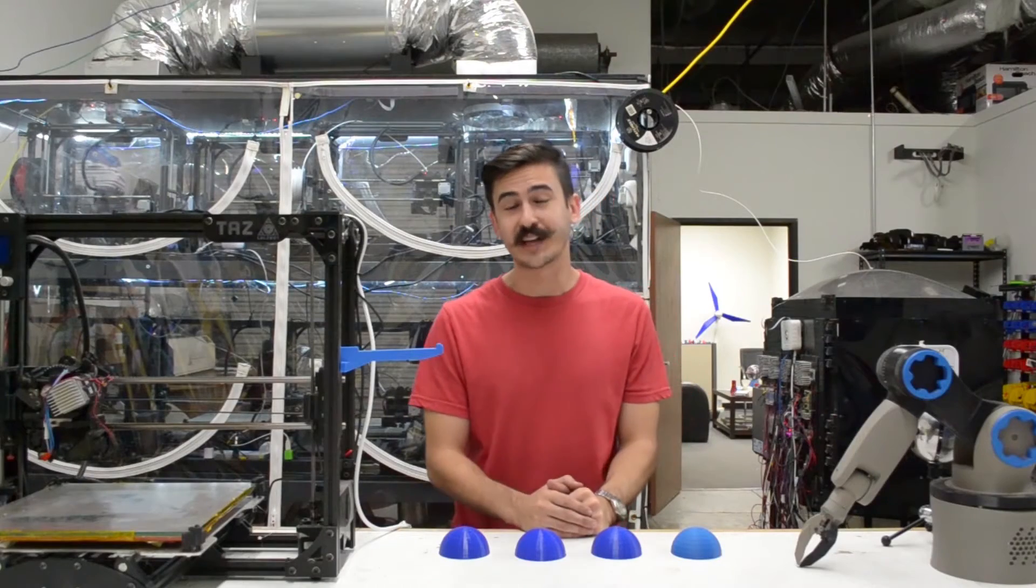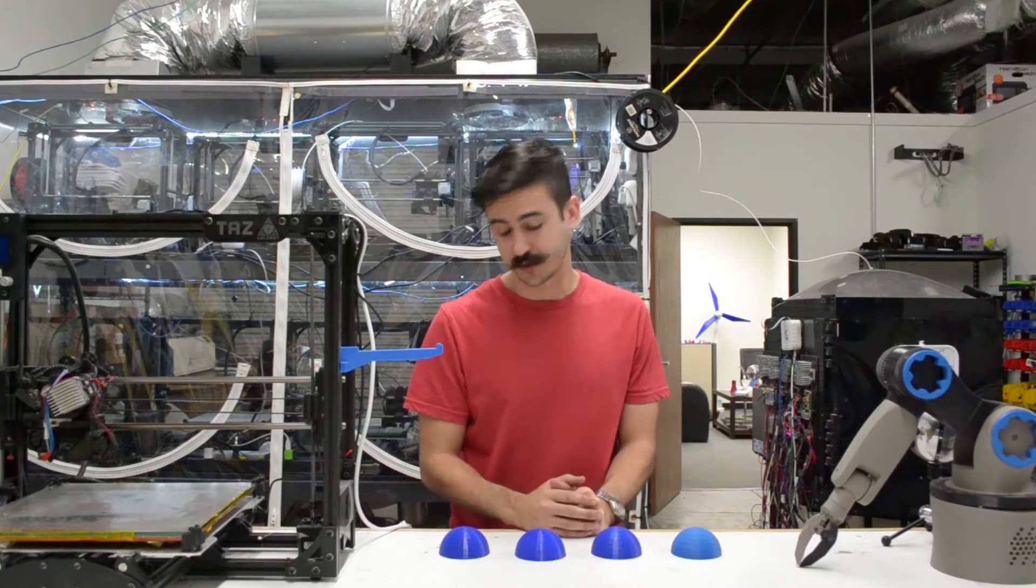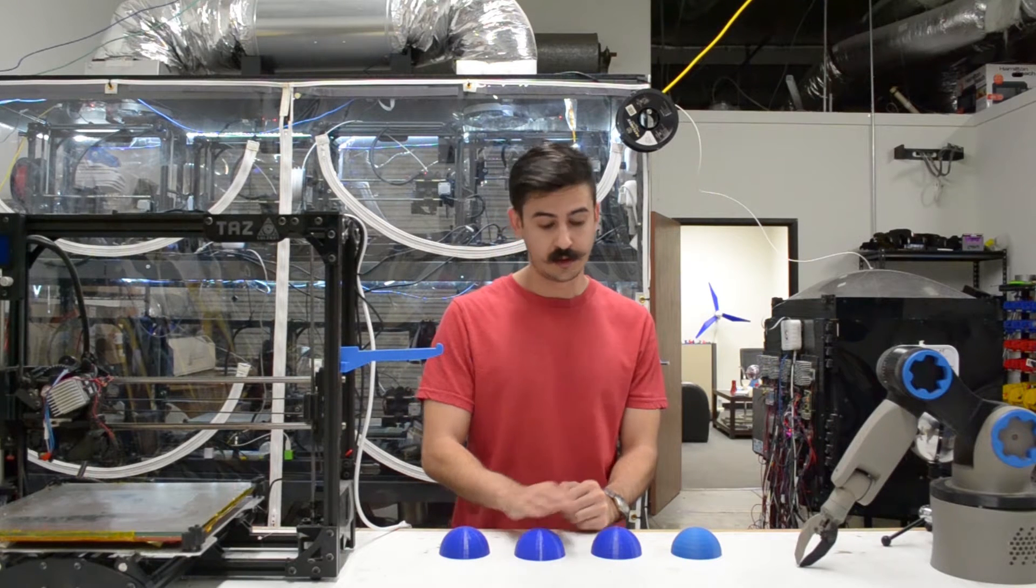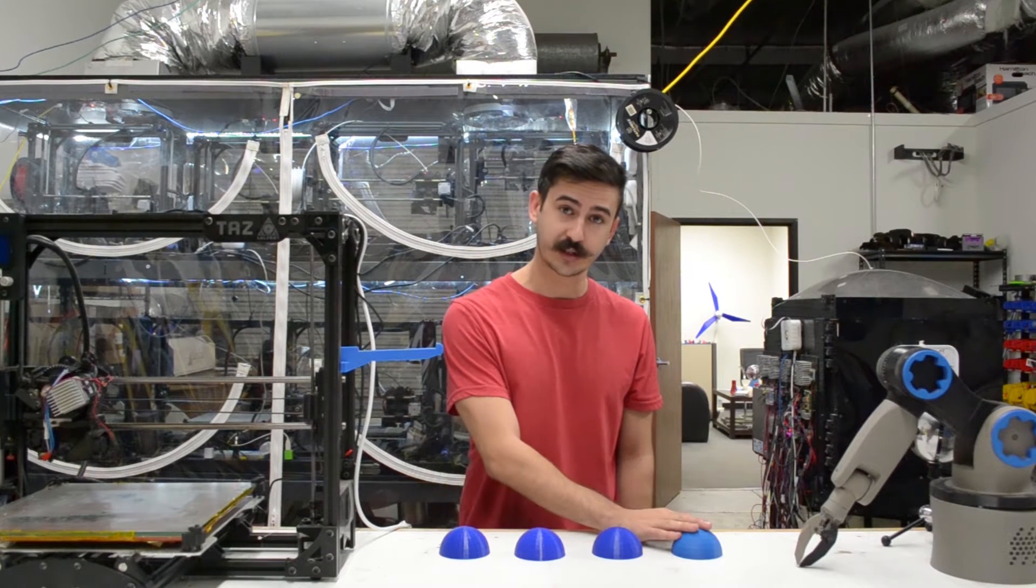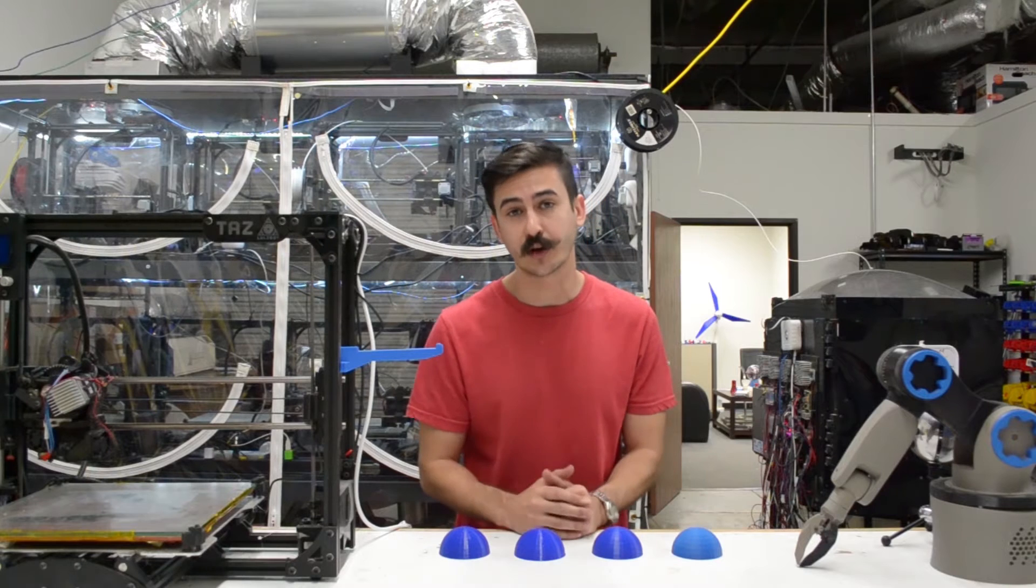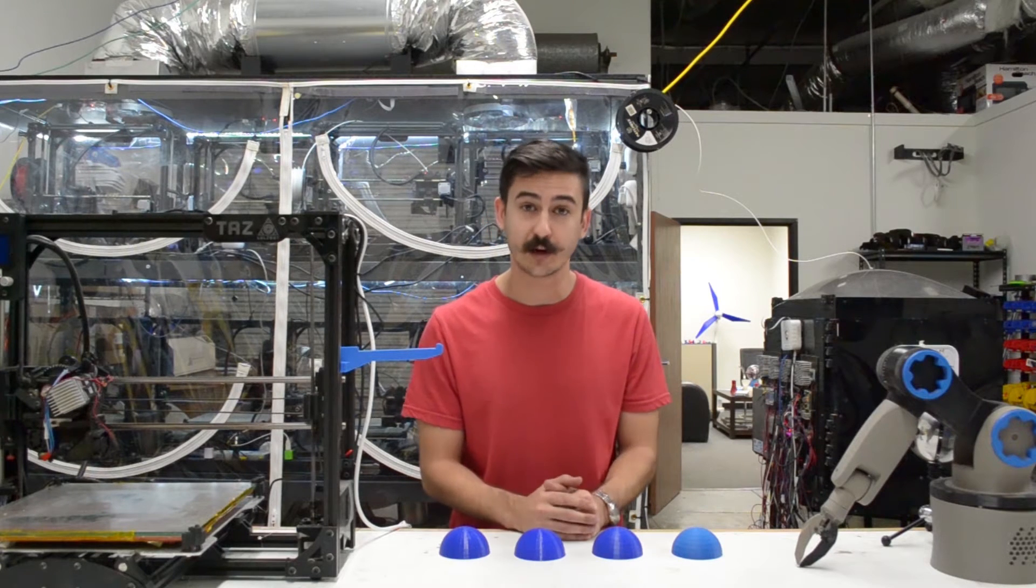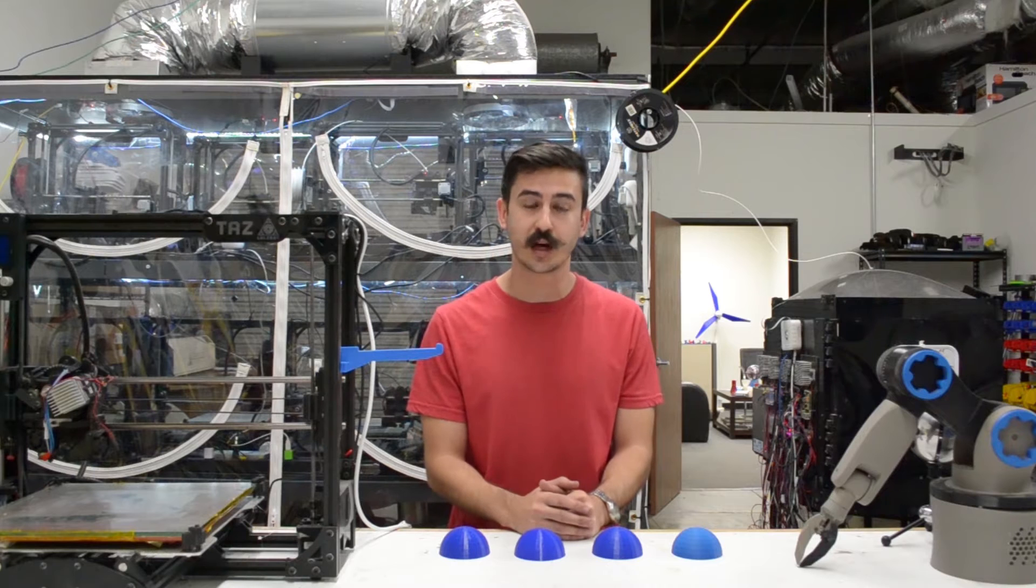Here at SD3D, we've standardized to four different quality options: Draft, Standard, Fine, and Ultra HD resolution. Now these terms were arbitrarily made by our team, but they do refer to the layer heights and the nozzle diameters used on the print.